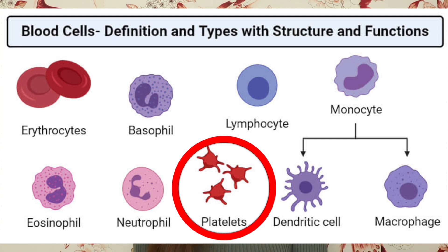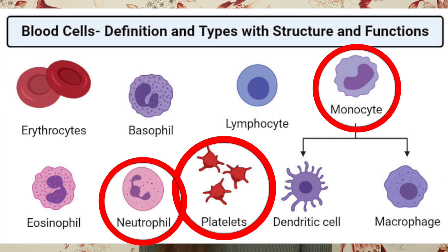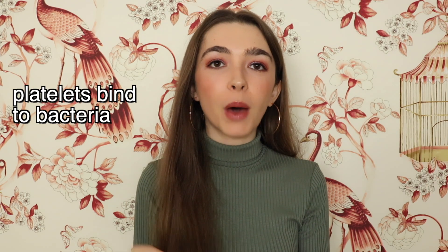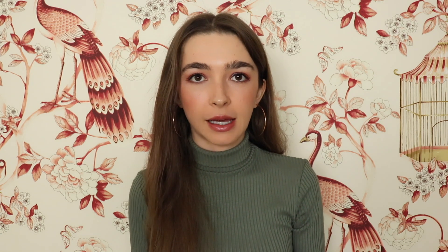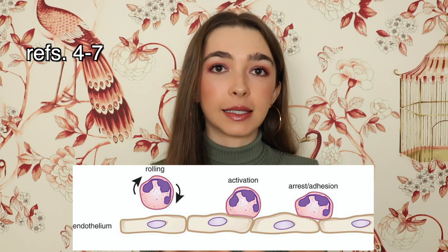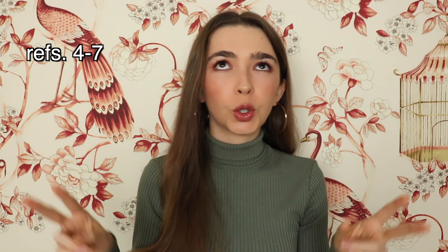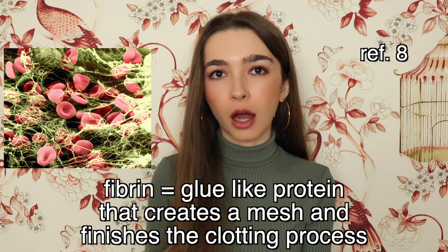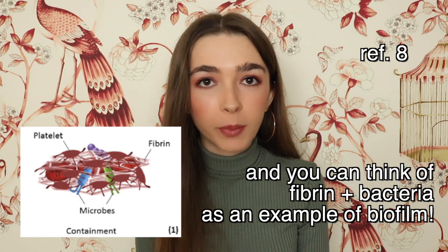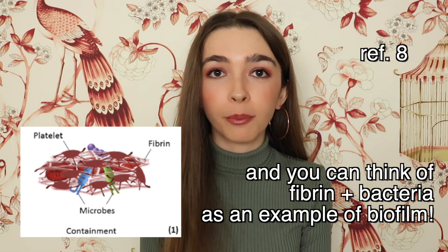Platelets are involved in immunothrombosis, but so are neutrophils and monocytes, which are two different types of white blood cells. Platelets can bind to the surface of bacteria, while the neutrophils and monocytes facilitate blood coagulation. White blood cells can also become sticky, meaning they can stick to the blood vessel lining and crowd the passageway. Platelet activation also stimulates fibrin formation. Fibrin is a glue-like protein that creates a mesh on top of the blood clot and finishes the clotting process. Fibrin has been shown to trap bacteria and prevent infection from spreading, but this also impedes blood flow by narrowing the blood vessel passage.